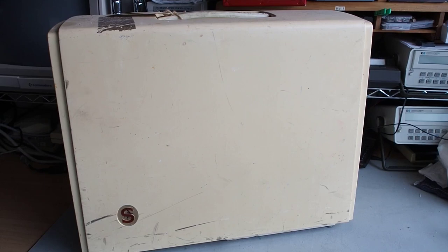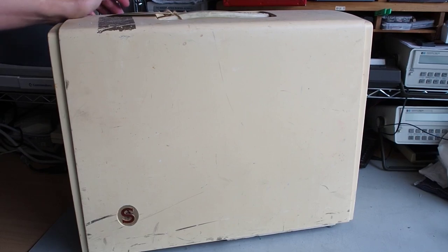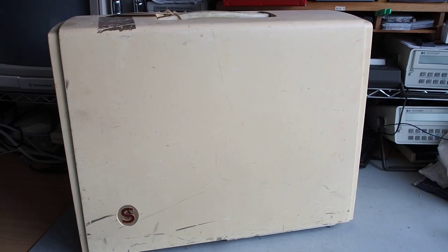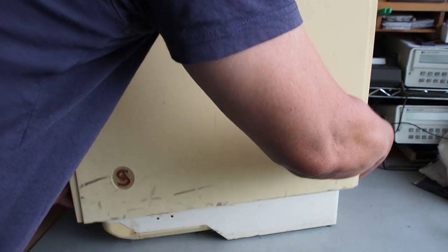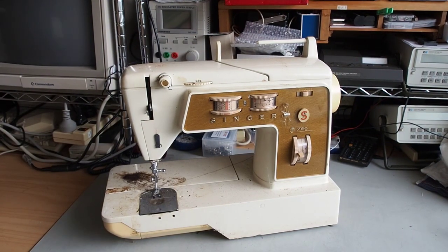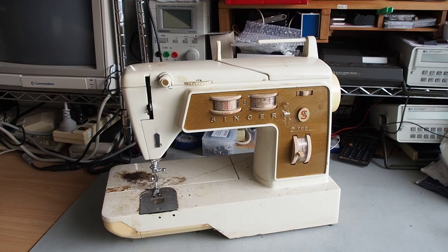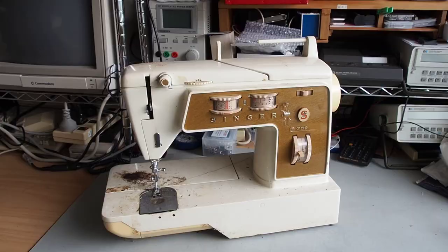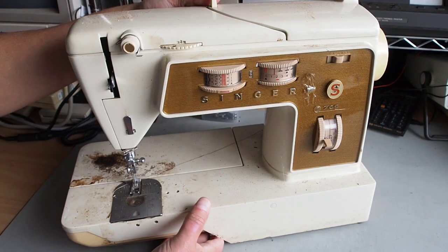Stop the press! I just found a Singer 786. I was putting away my other machines and found this 786. It's looking pretty rough. Wherever I've said in this video that I've got three different models, well, actually looks like I've got four, so I'll do a quick rundown on this machine.